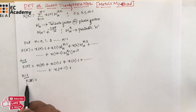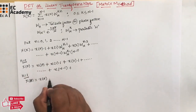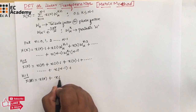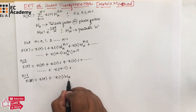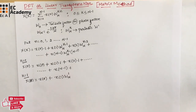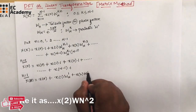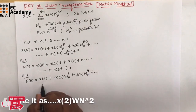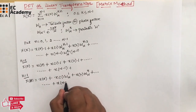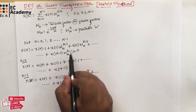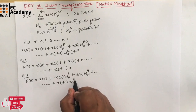If we put k = 1, then X(1) = x(0) + x(1)·W_N^1 + x(2)·W_N^2 + ... and so on, up to x(N-1)·W_N^(N-1).